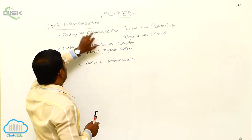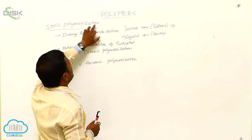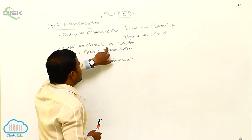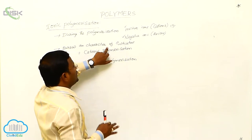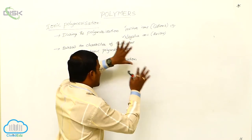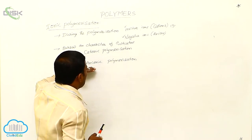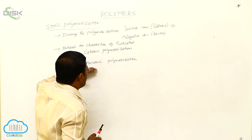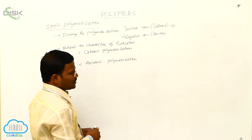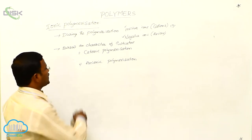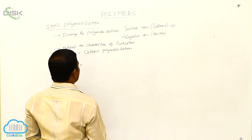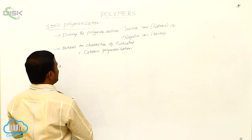Those ionic polymerizations in which negative species or anions act as initiators are called anionic polymerization. So let us learn about cationic polymerization and how the cationic polymerization takes place.